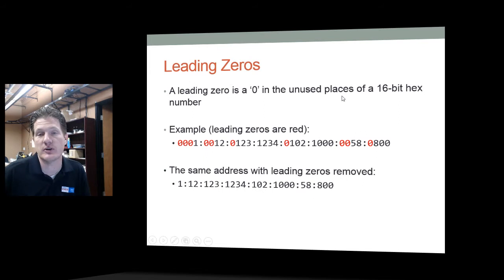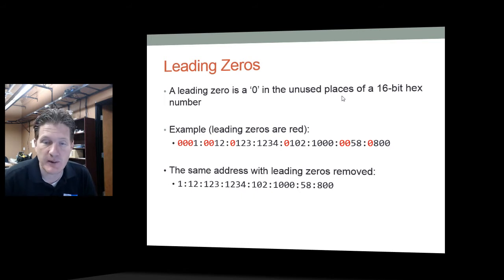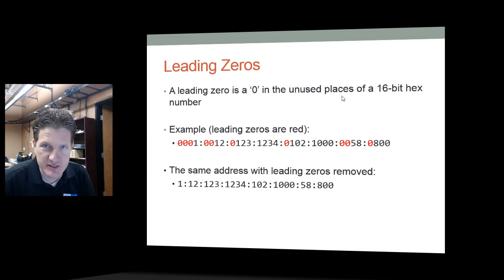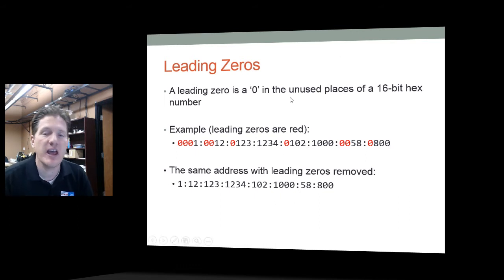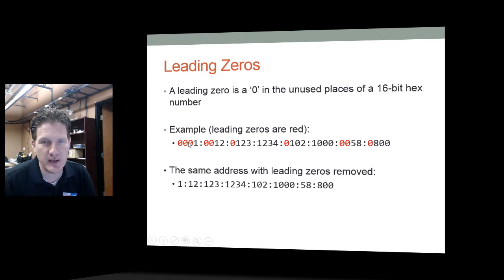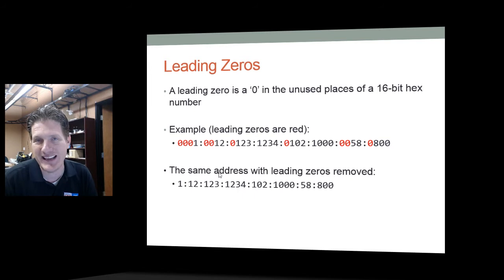Let's look at how leading zeros are removed from an IPv6 address. For example, '0001' can be reduced to just '1,' and '0012' can be reduced to '12.' However, you cannot remove trailing zeros — only leading zeros. So '10000' is still represented as '10000.' That's the first way to shorten an IPv6 address.